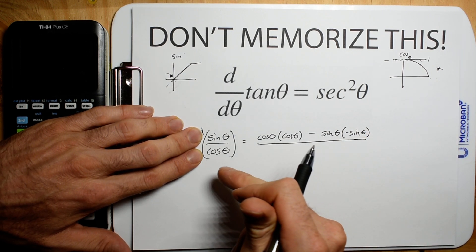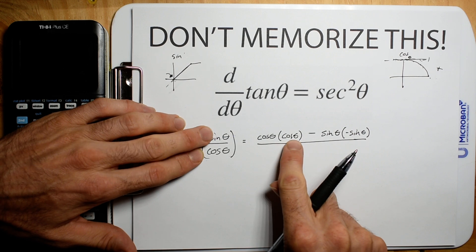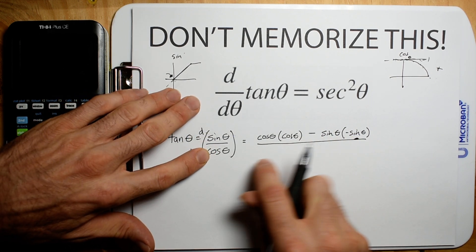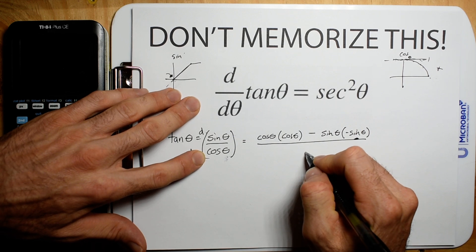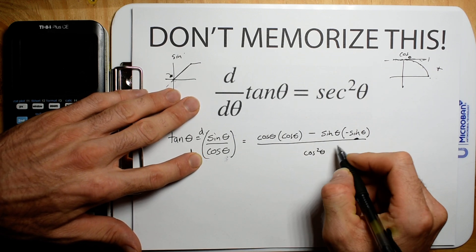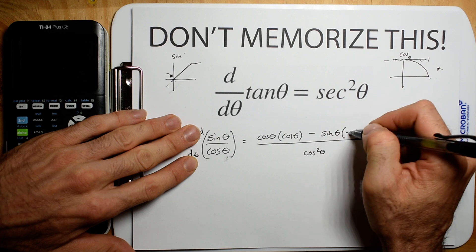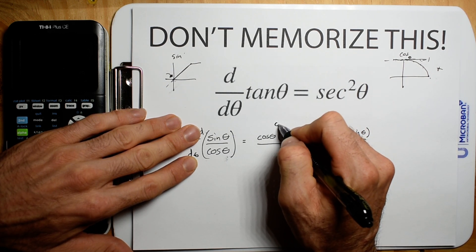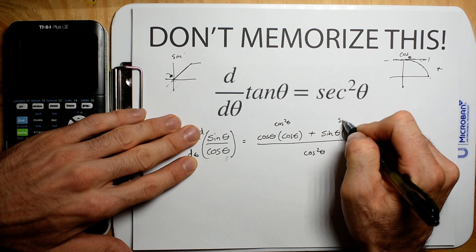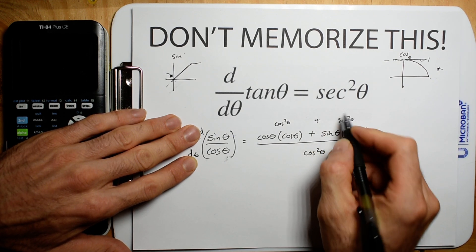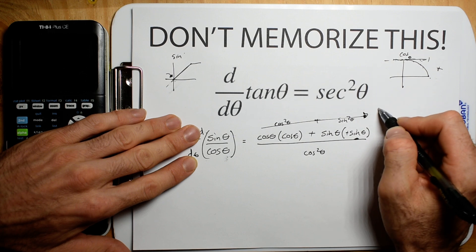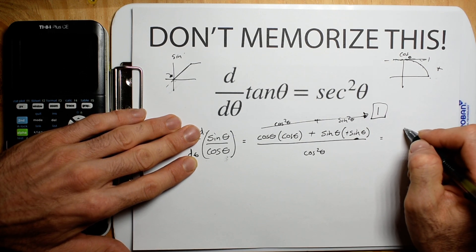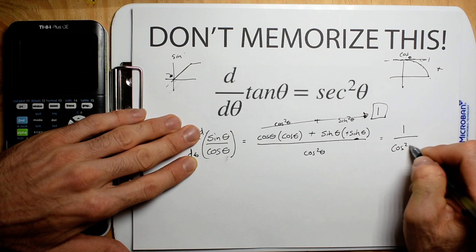Alright, so again, bottom d top minus top d bottom, and then all divided by the bottom squared. So we got cosine squared theta. And you should be able to see this just becomes positive. And then we have two of these. So we have cosine squared theta, and then we have sine squared theta. Well, that's just going to equal 1. So that's probably one of the easiest trigonometric identities. And we're just going to have 1 divided by cosine squared theta.